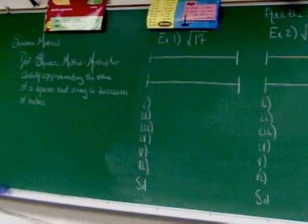This extension of chapter 9, section 1 is entitled the squeeze method. Now the squeeze method is a method for closely approximating the value of a square root using a succession of halves. There's actually several different variations on this.